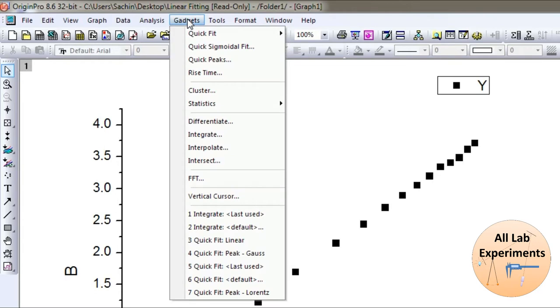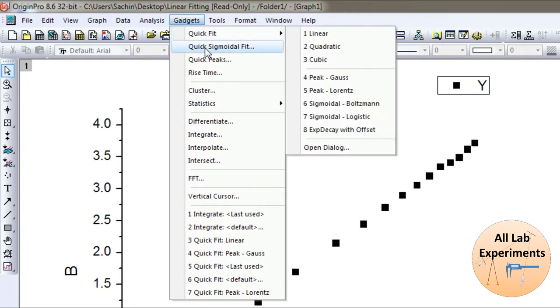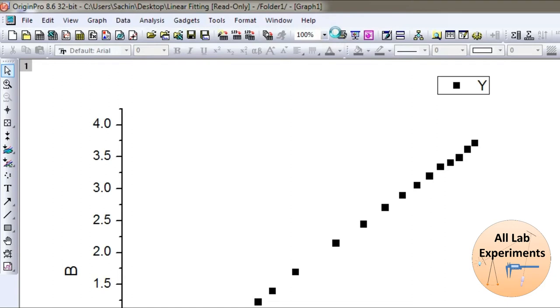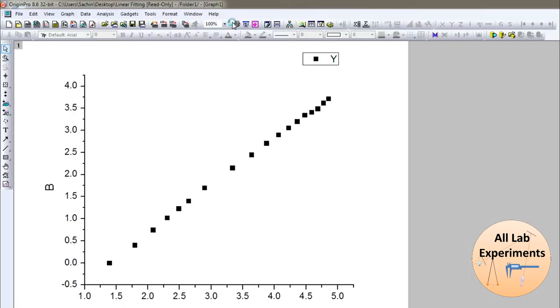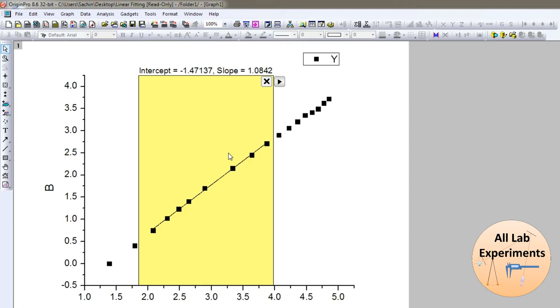Using the gadget option. In the gadget option I will find quick fit. In the quick fit option here is one option, linear. So if I click this, this box will open. This will give me that the slope...